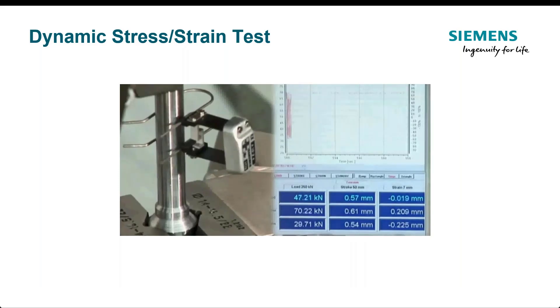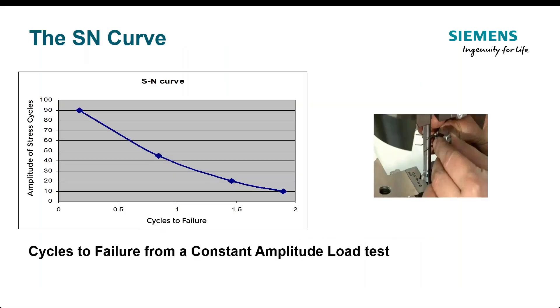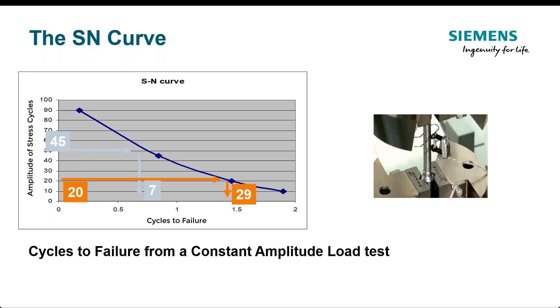These tests are part of what we're going to make up our material curve tests, namely the SN curve. So we're going to take specimens, we're going to cycle them at a load level, and we're going to count the cycles to failure. And as no surprise, the higher the load we cycle at, the lower the cycles to failure. So an SN curve is cycles to failure from a constant amplitude load test.